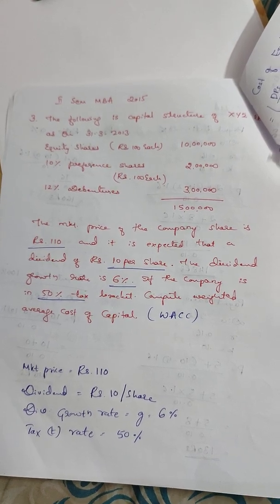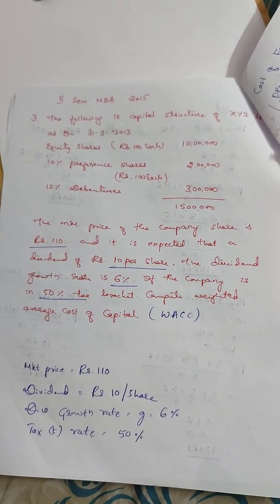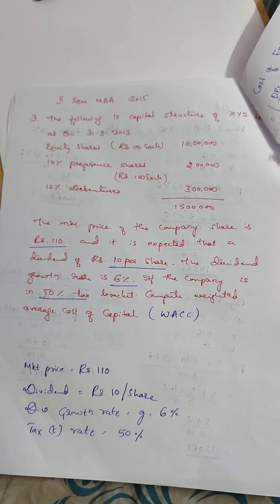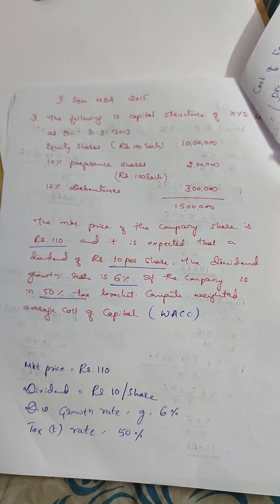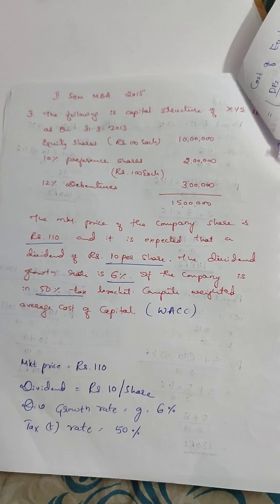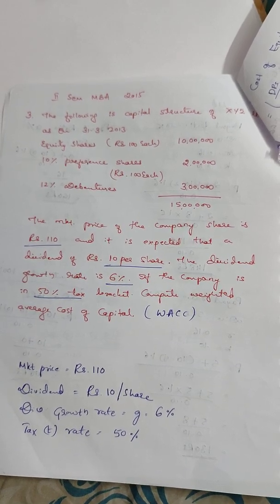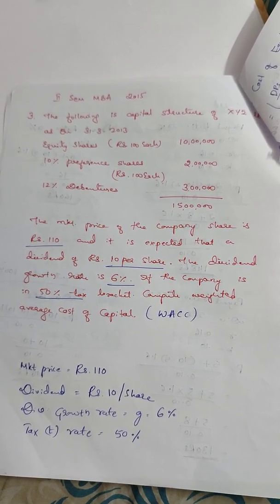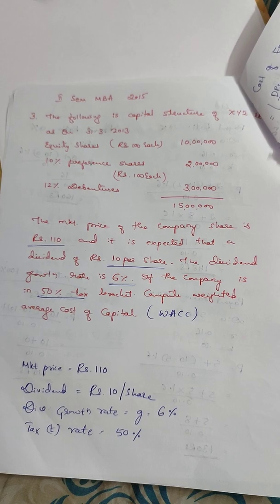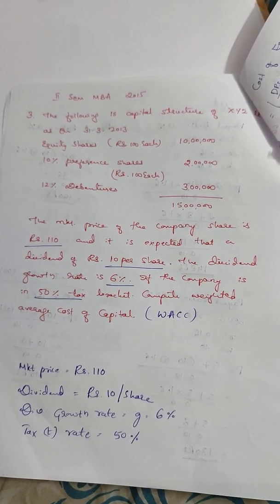The market price of the company's share is Rs. 110, and it is expected that a dividend of Rs. 10 per share will be paid. The dividend growth rate is 6%. The company is in a 50% tax bracket. Compute the weighted average cost of capital.